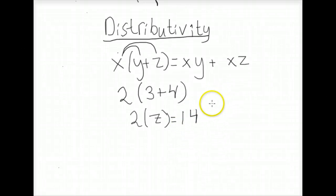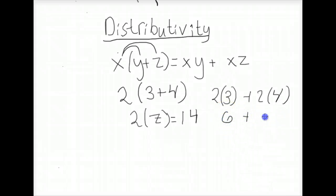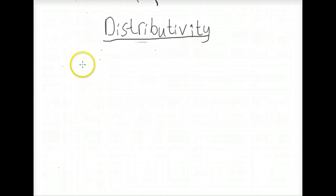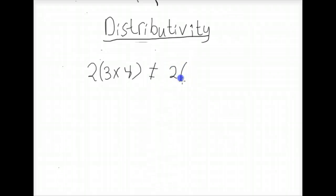Using the distributivity property, 2 times (3 plus 4) also equals 2 times 3 plus 2 times 4, which equals 6 plus 8, which again equals 14. It should also be noted that multiplication does not distribute over multiplication — for example, 2 times (3 times 4) is not equivalent to (2 times 3) times (2 times 4).